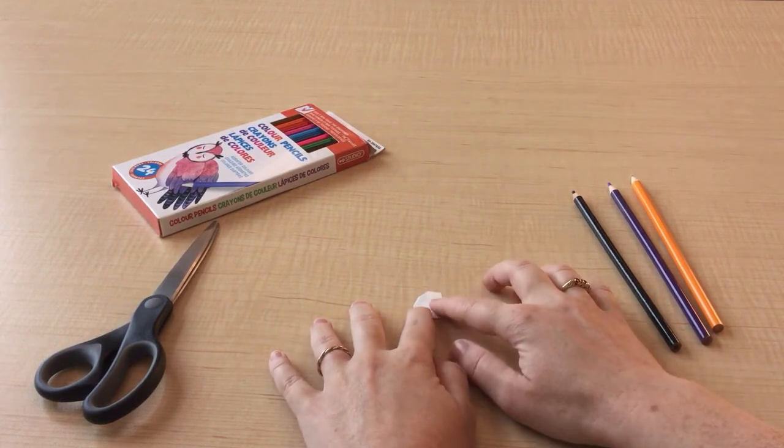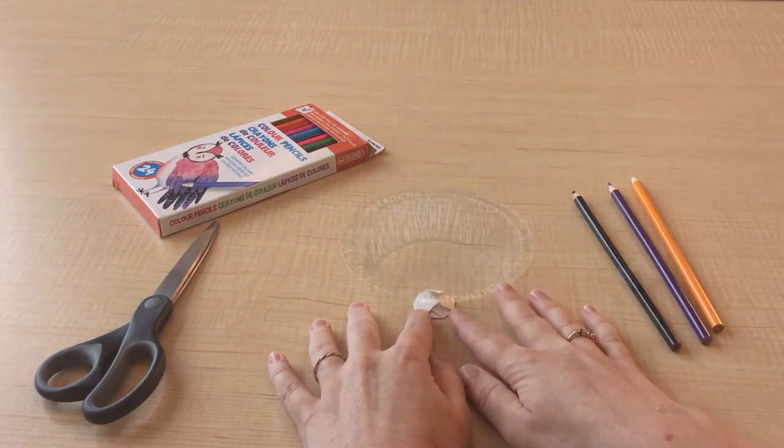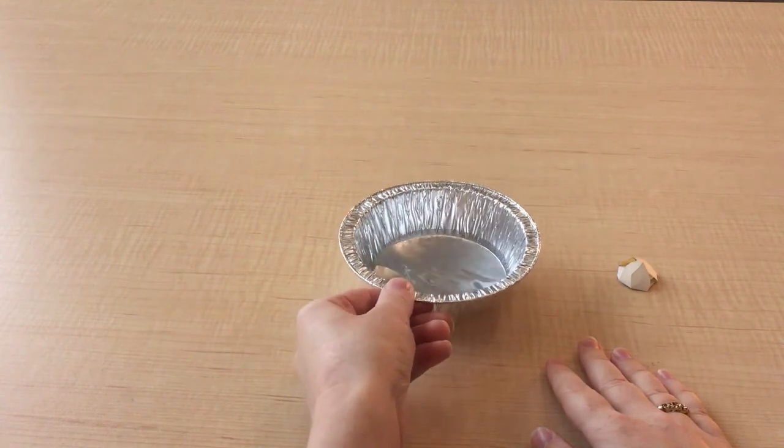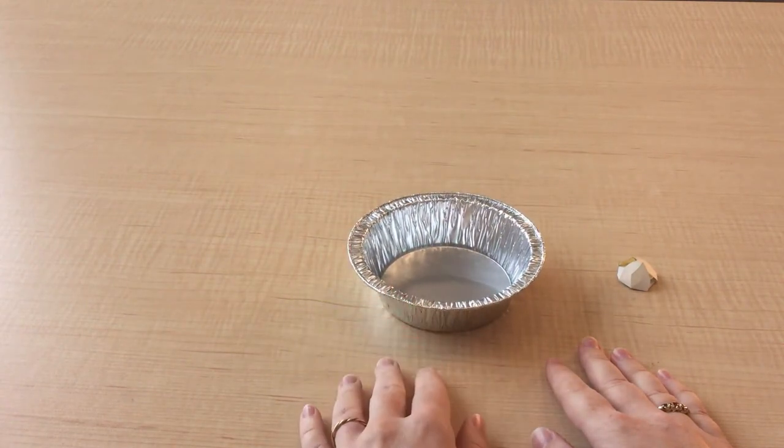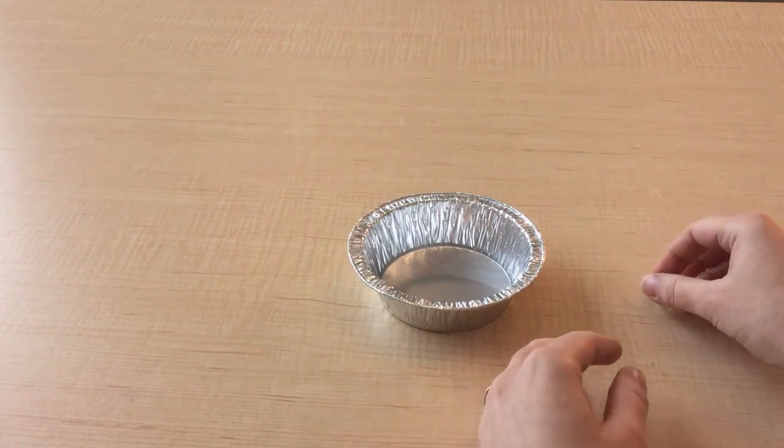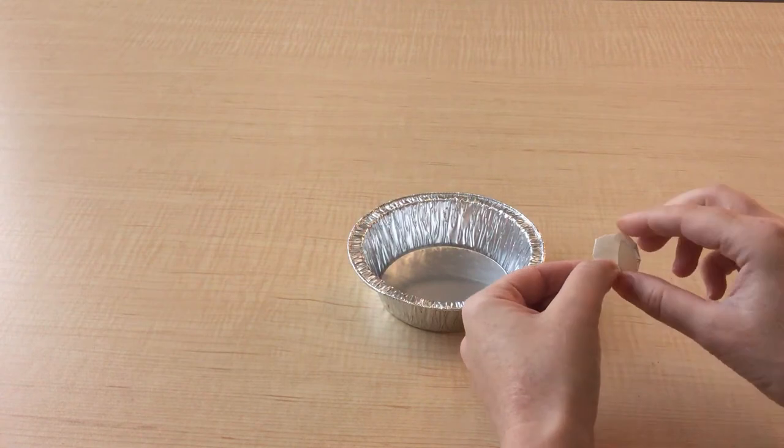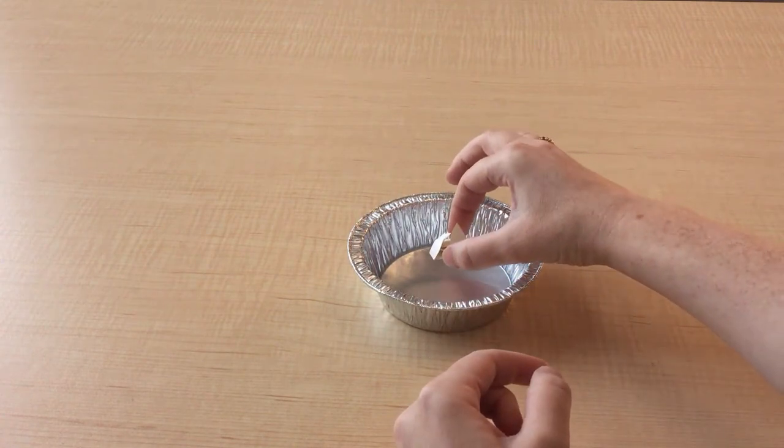Your flower should look a little something like this at the end. We'll get our dish with about a teaspoon of water in the center, just enough to cover the bottom, and then pop in our magic flower and watch the petals open up just like a flower blooming.